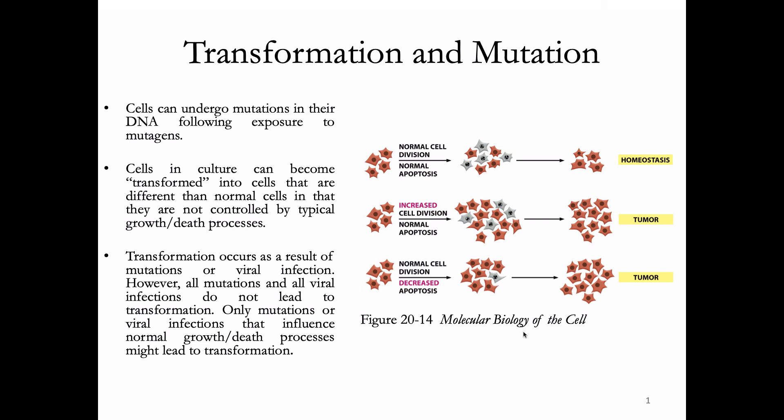However, if a mutation occurs in a gene that influences something like cell division, apoptosis, or cell cycle control, then our cell may become transformed, because that cell is no longer going to be controlled by normal cell growth or death processes.